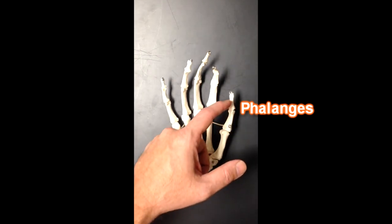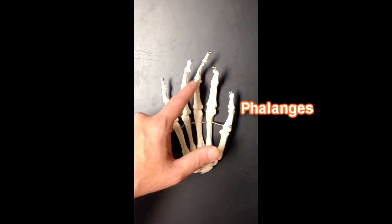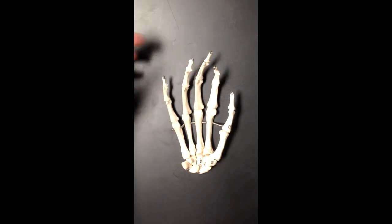You can see we've got two phalanges in the thumb, on the thumb side, and then three phalanges in each of the other fingers, which add up to 14, not 15. Remember there's only two phalanges in the thumb.